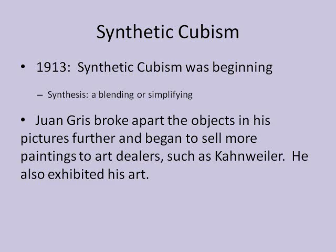Gertrude Stein and Léonce Rosenberg bought paintings from Juan Gris in 1913. Also in 1913, Kahnweiler, who was an art dealer, offered Gris a contract, which he accepted. Since Braque and Picasso were not at this time showing their work, the Section d'Or was the public face of Cubism. Gris was very gifted at painting, and he attracted the attention both of the dealers and of the well-informed collectors.